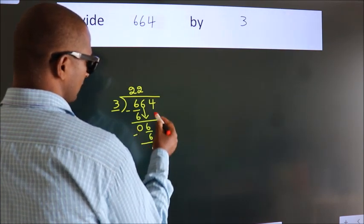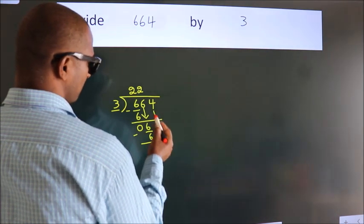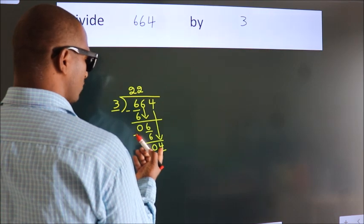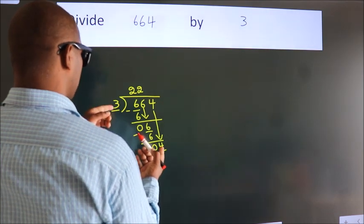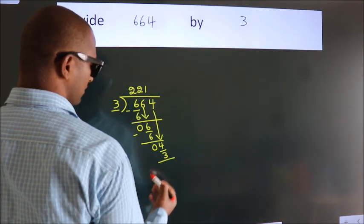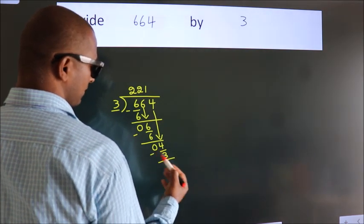After this, bring down the beside number. So, 4 down. A number close to 4 in 3 table is 3 ones, 3. Now, we subtract. We get 1.